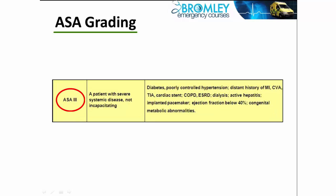When we move to ASA 3, we're getting into more severe disease: high blood pressure, bad diabetes, a history of myocardial infarction or stroke, COPD, dialysis, a defibrillator, implanted pacemakers, and a fair degree of heart failure with ejection fraction below 40%. That's ASA grade 3 — these patients are going to need more supervision.